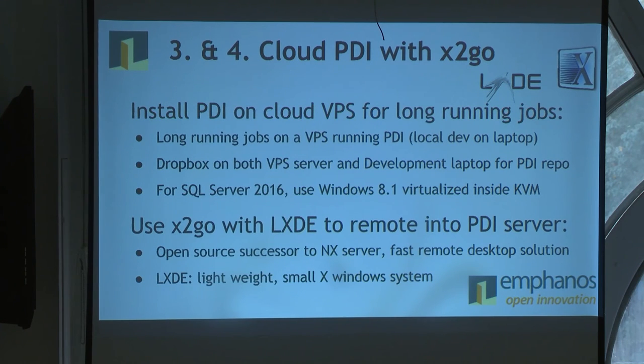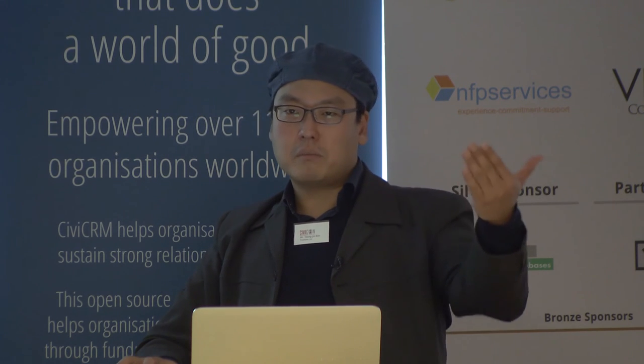That's where X2Go comes into play. There was an Italian open source company called NX Server that did great work, but then became more and more closed source. Their project was forked — one of the beauties of open source. The folks who forked it, based in Germany, created X2Go. It's a very fast way of accessing a remote server and seeing what you would see if logged in at the console. If you install LXDE — a lightweight X window system — with those two pieces you can run Pentaho remotely from a coffee shop on your Amazon cloud infrastructure or Linode.